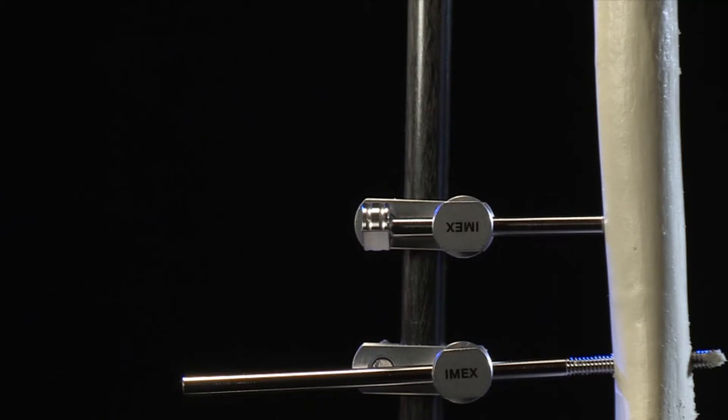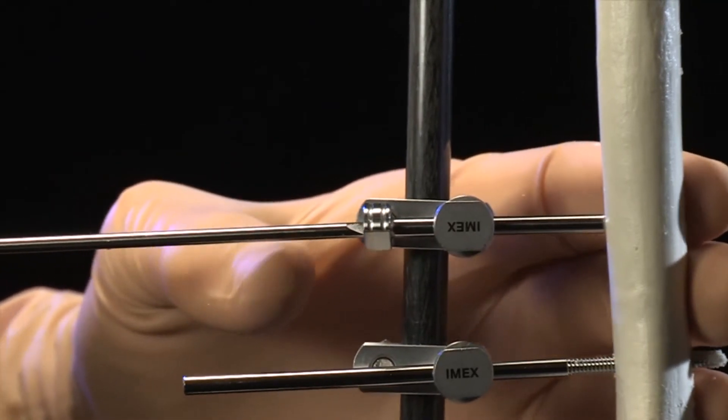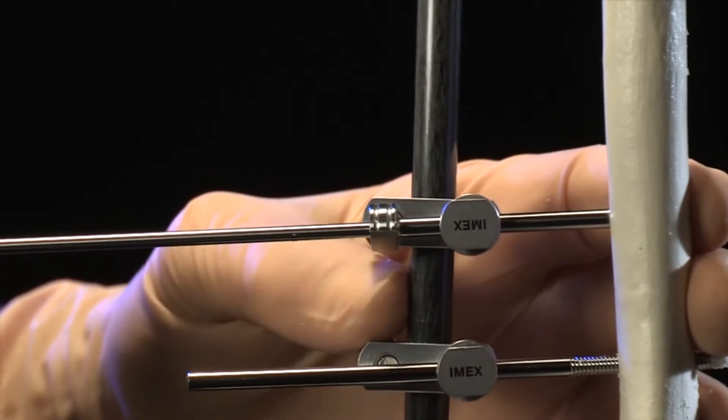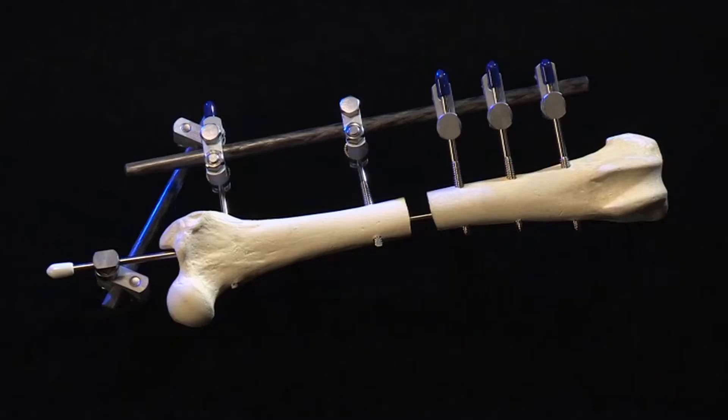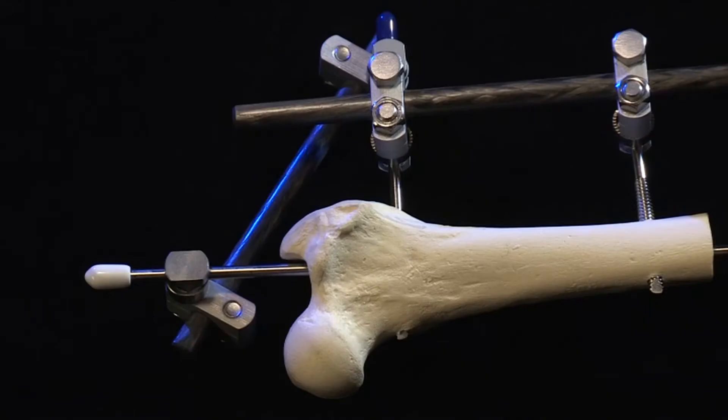Linear external skeletal fixation integrates the use of percutaneous transfixation pins, an external frame composed of clamps and one or more connecting rods. Also, a tied-in intramedullary pin for fracture fixation is used occasionally.